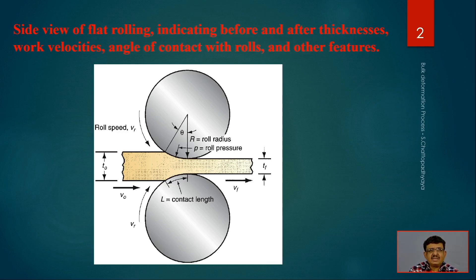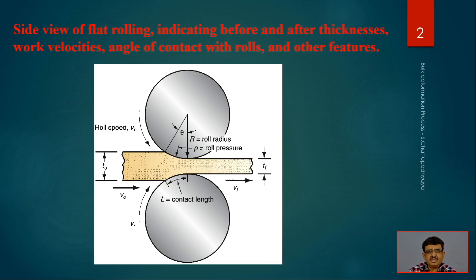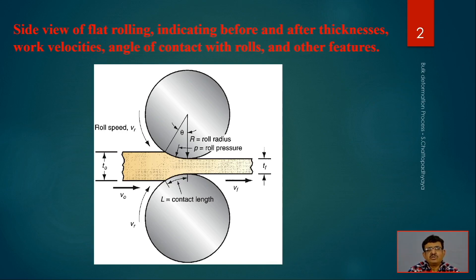There are some angles — the bite angle where the material is in contact with the roll, called theta. Roll radius is R, P is the roll pressure, and L is the contact length wherever the roll is adhered to the surface of the input material. The initial entry velocity and final velocity are noted, and the roll speed V_R is the same for both rolls but rotating in opposite directions. The outcome is a reduced, plastically deformed part.